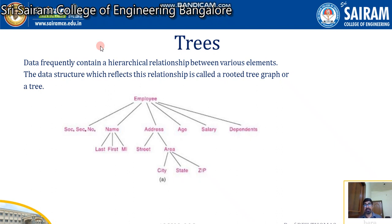In this video we are going to see about what is a tree. As I told in the previous video, tree is a non-primitive, non-linear data structure. There are certain cases where you need to show the relationship in a hierarchical format. In this case we cannot use arrays or linked lists, so we have to use a separate data structure called trees — this is the way we are going to store the data.